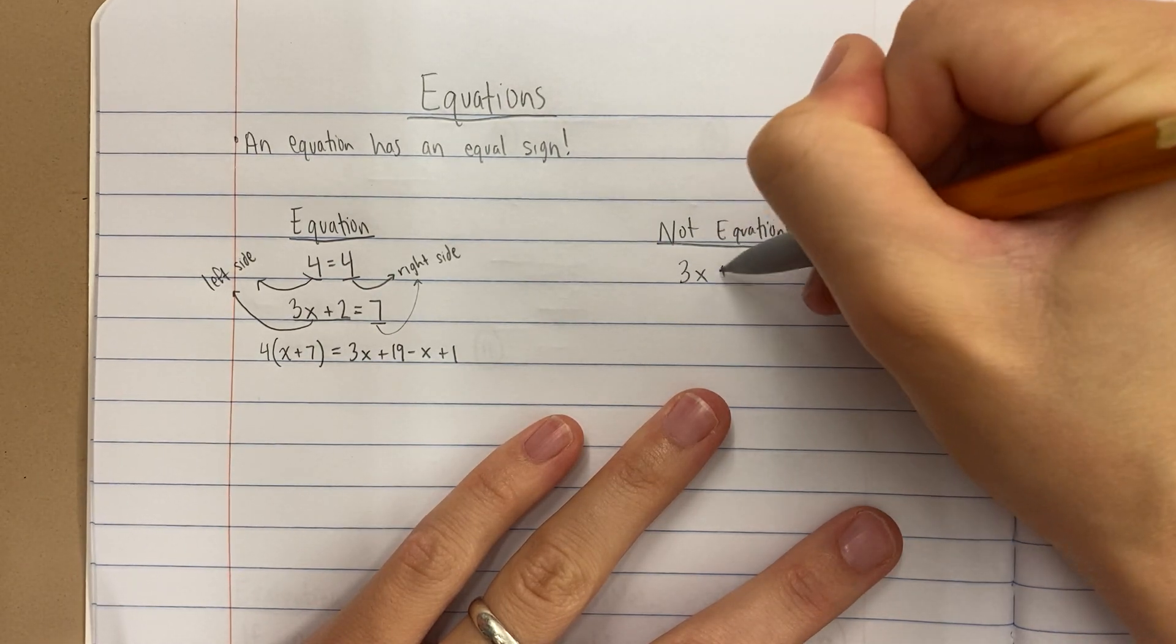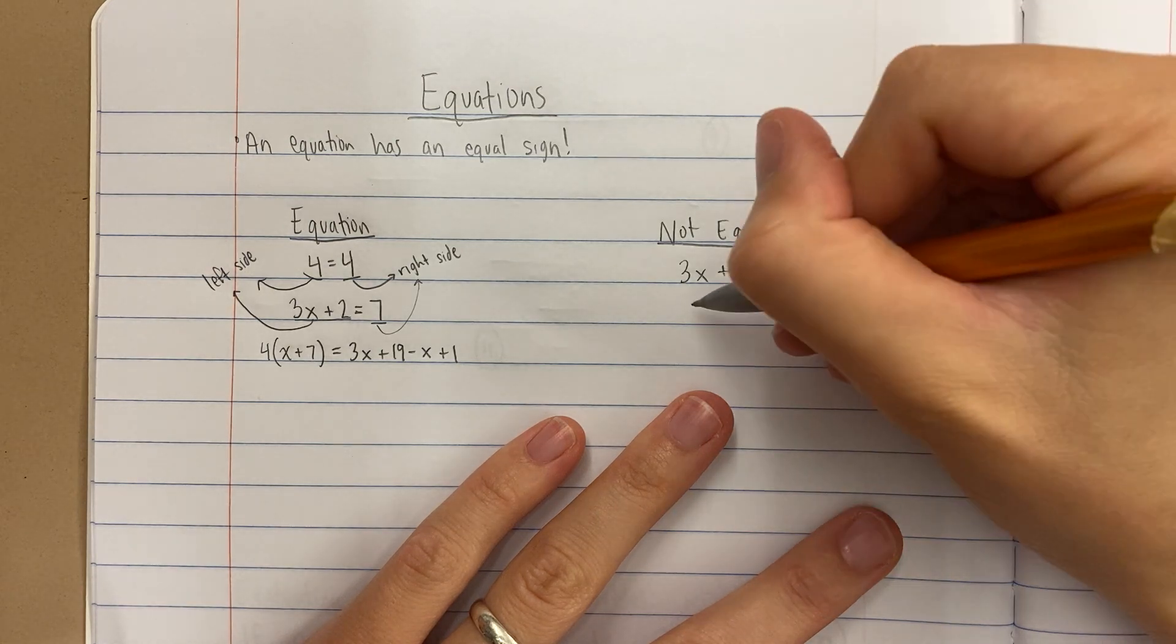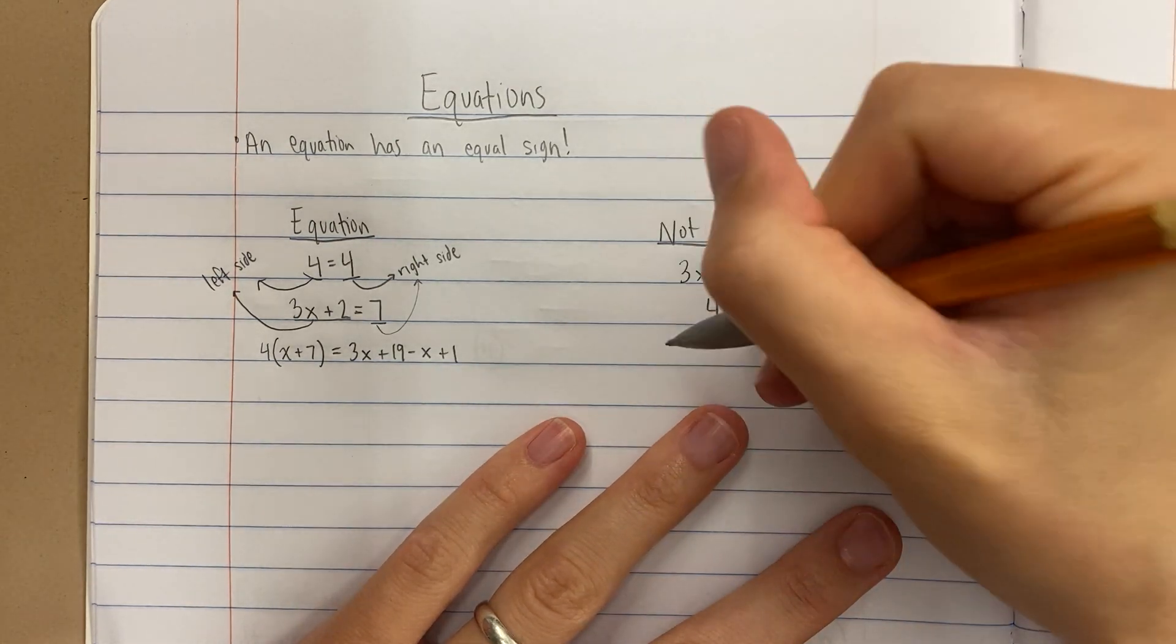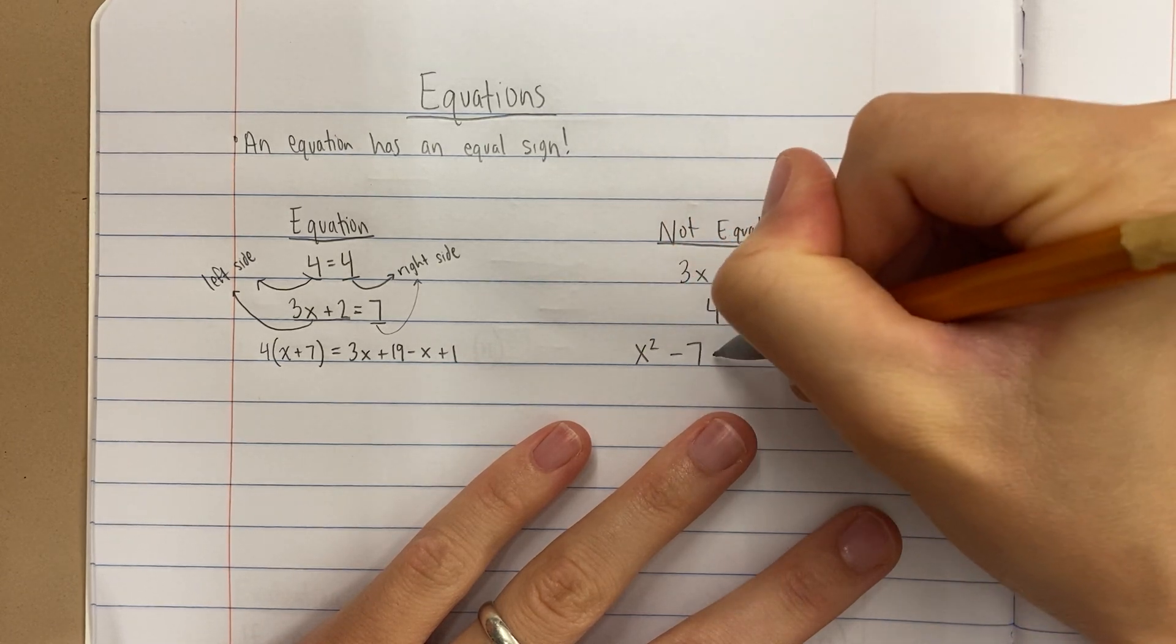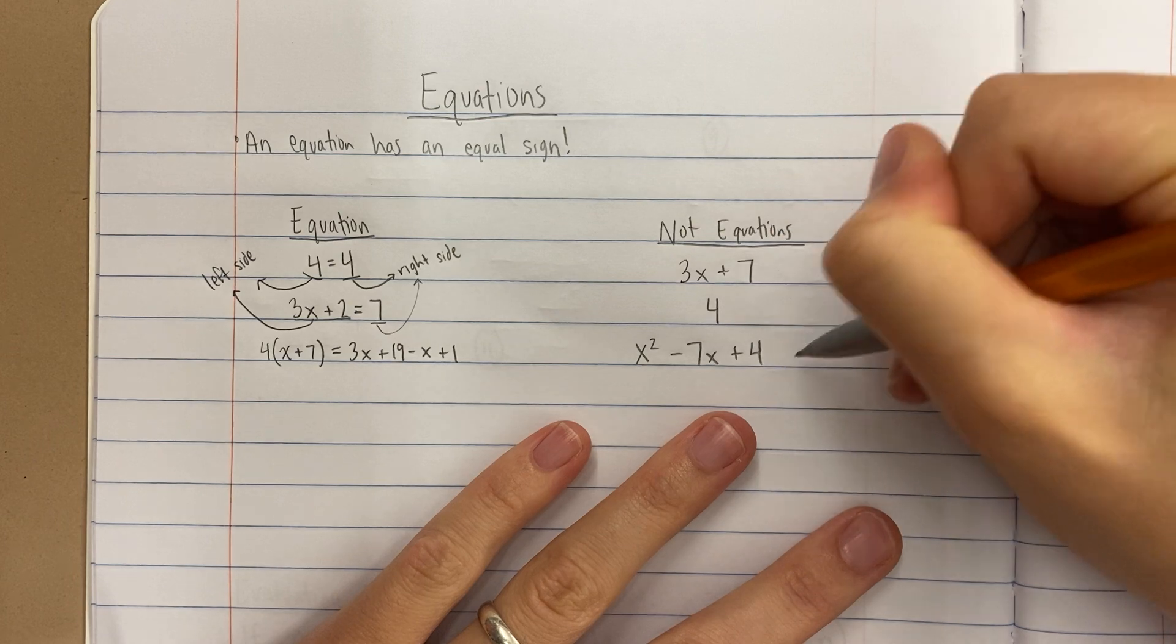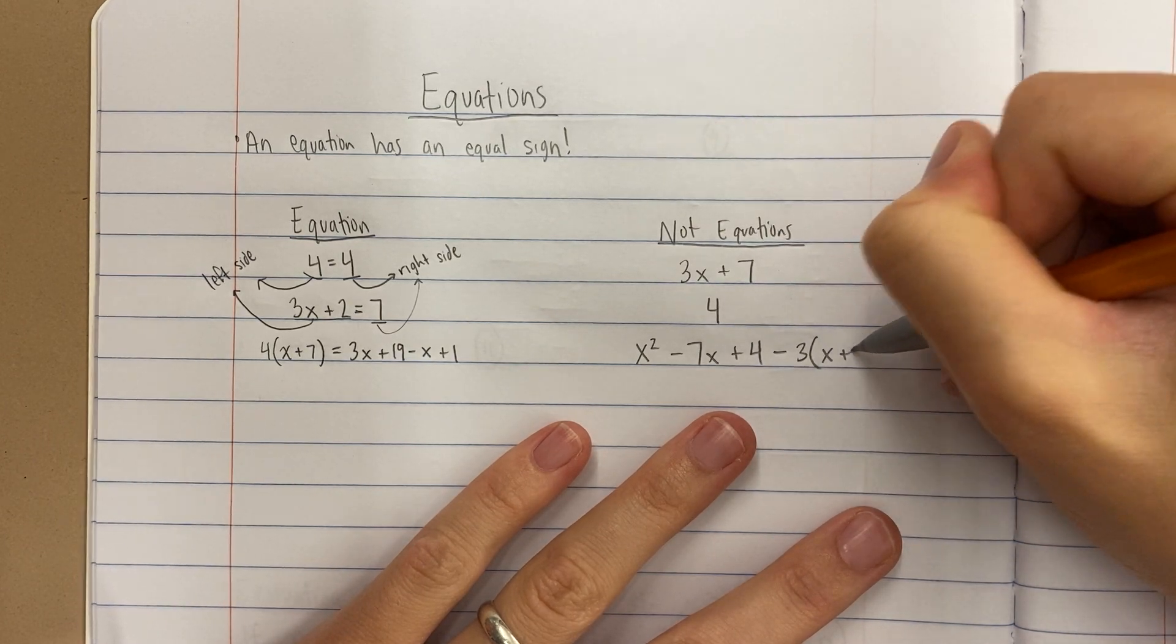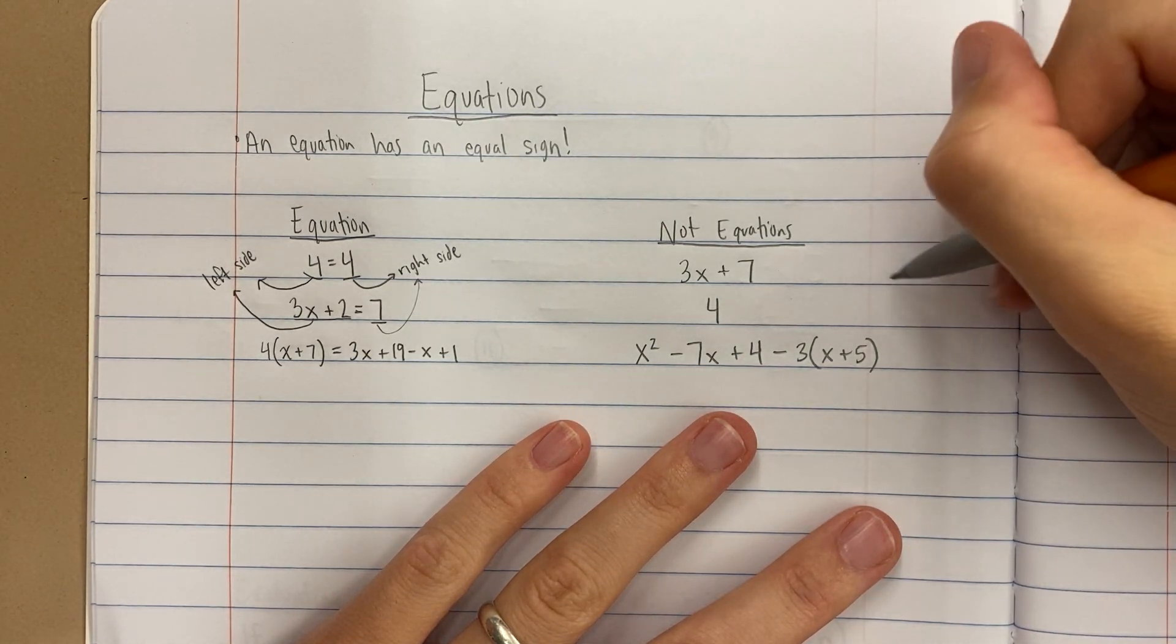These are not equations. Like 3x plus 7, not an equation. Why? Because it doesn't have an equal sign. Remember, equations have an equal sign. 4, that's not an equation. Even if it's super long: x squared minus 7x plus 4 minus 3 times the quantity x plus 4, still not an equation. Why? Because it doesn't have an equal sign.